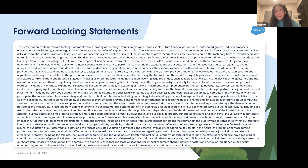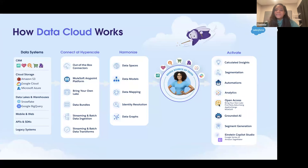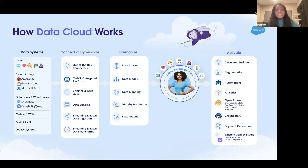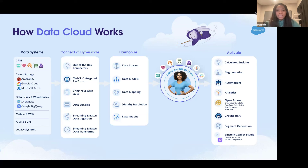Let's jump right in on how Data Cloud works. Data Cloud is a customer data platform — it has evolved from many other versions like CDP, Customer 360 Audiences, and formerly Genie, to now become Data Cloud. Data Cloud is designed to allow you to connect multiple source systems and ingest data about a customer from those multiple source systems.